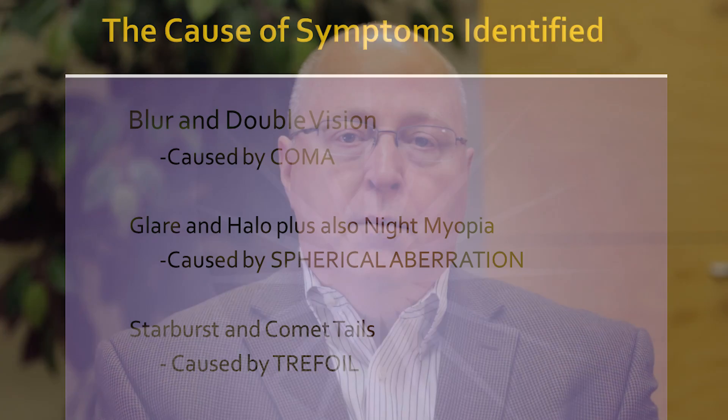What he did is he understood where visual symptoms and complaints came from. That's what I'd like to do. What is the cause of certain visual complaints? Blur and double vision always comes from coma. So if a patient complains of either blur or double vision, they have coma.